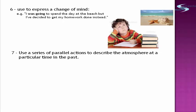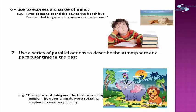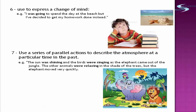The seventh usage of the past progressive tense is that it is used in a series of parallel actions to describe the atmosphere at a particular time in the past. Example: 'The sun was shining, and the birds were singing, as the elephant came out of the jungle. The other animals were relaxing in the shade of the trees, but the elephant moved very quickly.' There are three sets of past progressive tenses in those sentences.